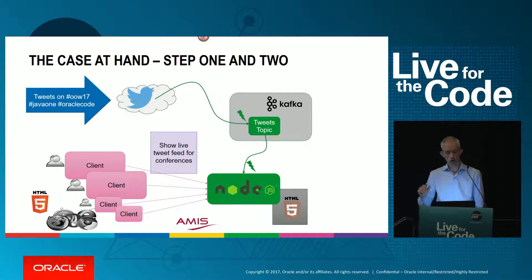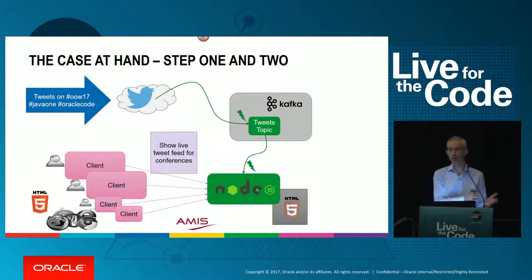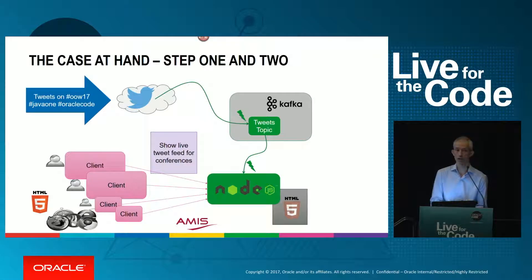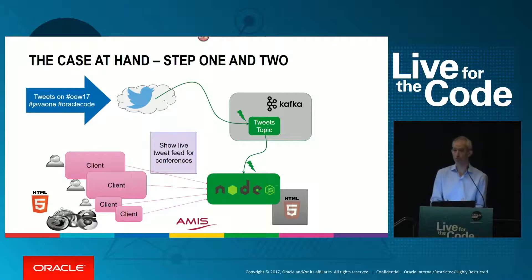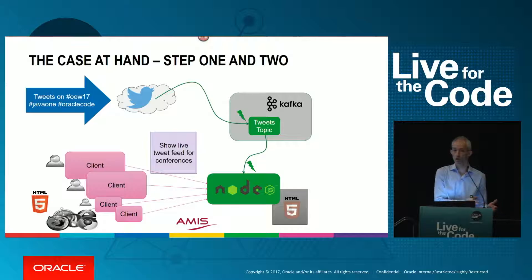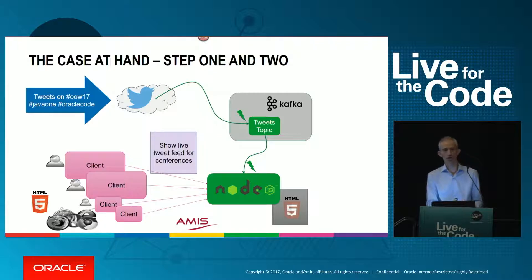That's the high-code approach — it gives us much more control and more information than the IFTTT recipe does. Tweets are now on the tweets topic — a good start. We've completely decoupled from Twitter: our application doesn't need to know about Twitter, only about Kafka and this specific Kafka topic. The question now is: how does the information go from this Kafka topic to my application? The server side has the data, but the next step is getting it from the server to the client without users needing to use F5 or resorting to Ajax long-polling, which puts a lot of burden on the server.